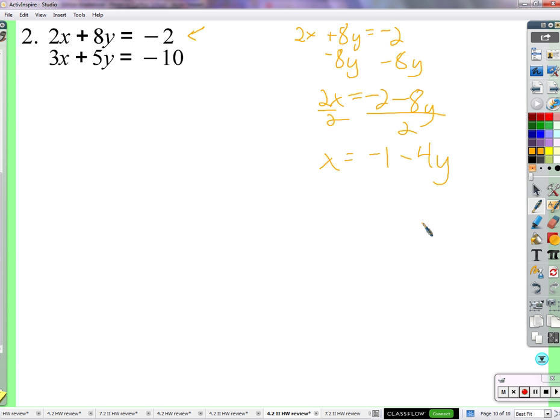Now if you left it negative 2 minus 8y over 2, it's still correct, and if you do all the work out meticulously you'll get the same answer. But it would be easier to just simplify and divide everything by 2. So now we know that x is equal to negative 1 minus 4y, and we use this equation, so we're going to want to substitute into this equation right there for x.